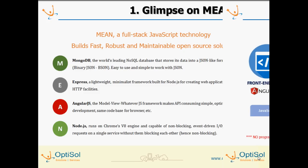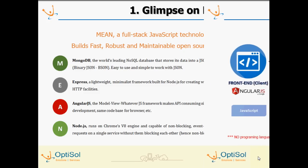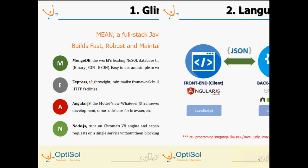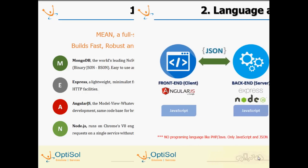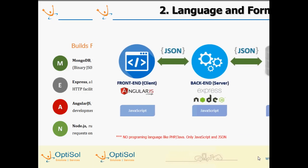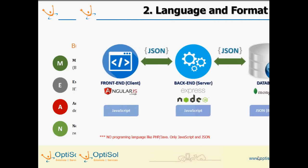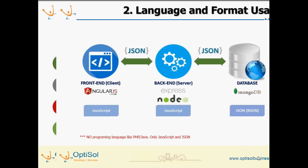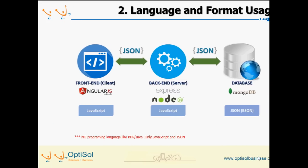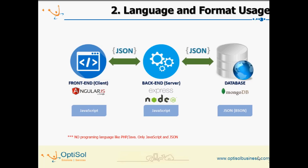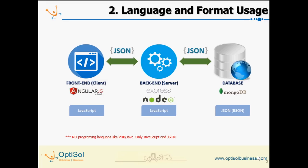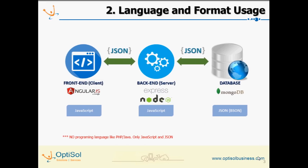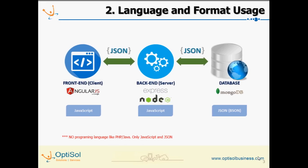Building applications using MEAN stack does not need any additional programming language. The client-side programming will be done using AngularJS, and server-side programming will be done using ExpressJS and NodeJS. JSON-based interaction between the tiers and the DB enhances a service-based architecture.